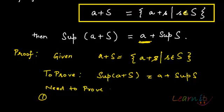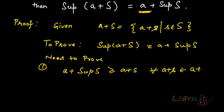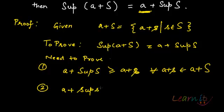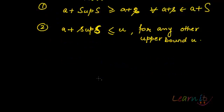We need to prove two things. Number one: A plus sup(S) will be greater than or equal to A plus s, for all A plus s belonging to the set A plus S — this establishes it as an upper bound. Number two: we need to prove that A plus sup(S) will be less than or equal to any other upper bound U — this establishes it as the least upper bound.